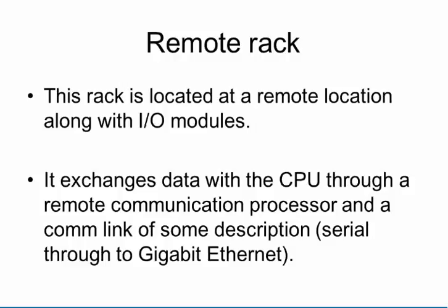Many machines need their inputs and outputs spread out because they are geographically distributed, requiring greater distance from the CPU to field devices that could be mounted on machinery many kilometres away. In that case, devices referred to as remote racks use a communications interface to convert the signals the bus needs into a transmission standard suitable for long distances. Ethernet is one of those type of infrastructures.